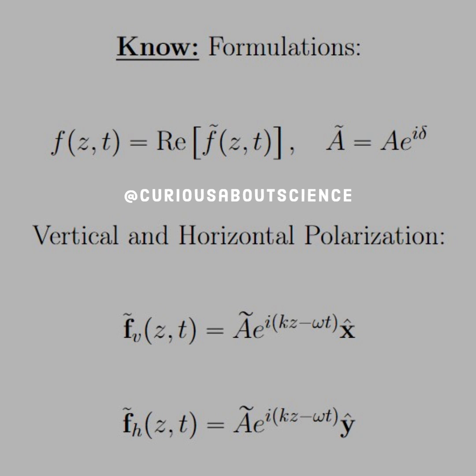What this is saying for the vertical and horizontal polarizations is the FV for the vertical is equal to the A tilde e to the i KZ minus omega T in the X hat. Similarly for H except in the Y hat. Now, let's play with how to work this construction.